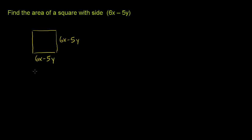And if we wanted to find the area of the square, we just have to multiply the width times the height. So the area for this square is just going to be the width, which is 6x minus 5y, times the height, which is also 6x minus 5y.